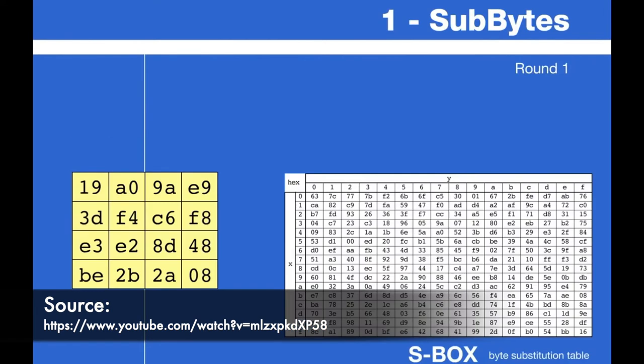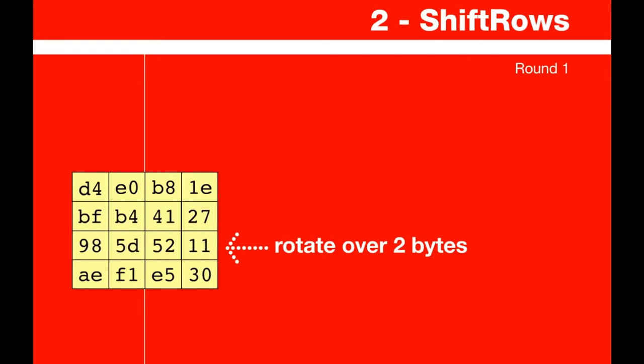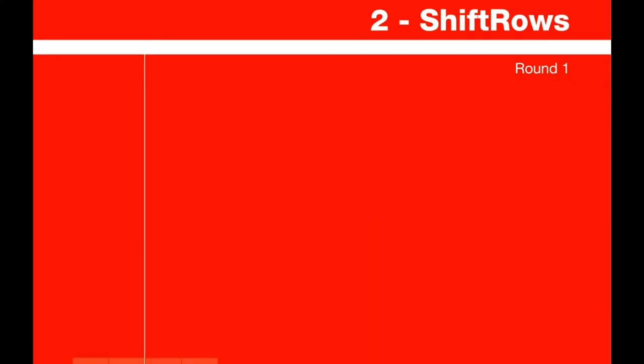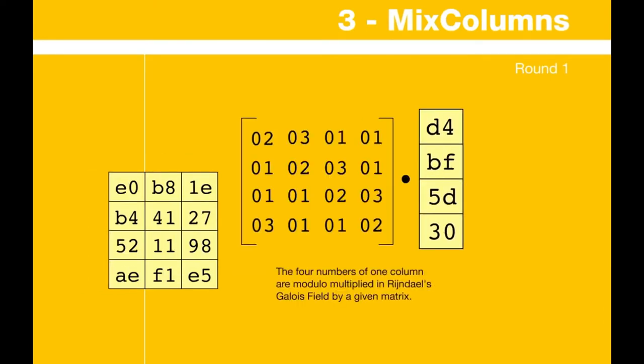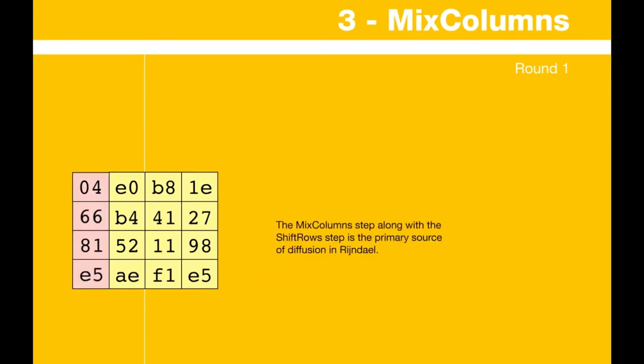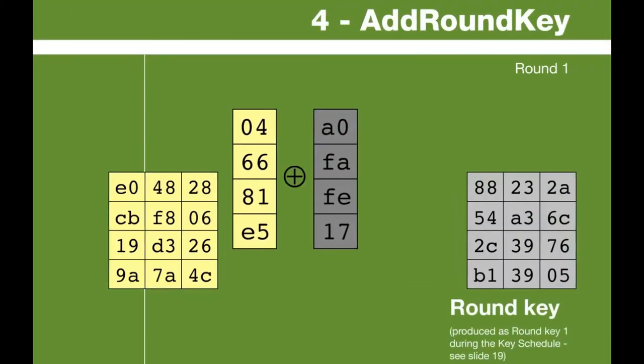Now before we explain the attack let's recap how an AES round works. So first we do subbytes which is the only non-linear step where every byte goes individually through the S-box. Next we do shift rows where every row of the state is rotated over 0, 1, 2 or 3 bytes. Then we do mix columns which individually transforms every column by multiplying it with a matrix and therefore we mix the bytes of that column. And finally we do add round key where every byte of the state is exorbed with the corresponding byte of the round key.